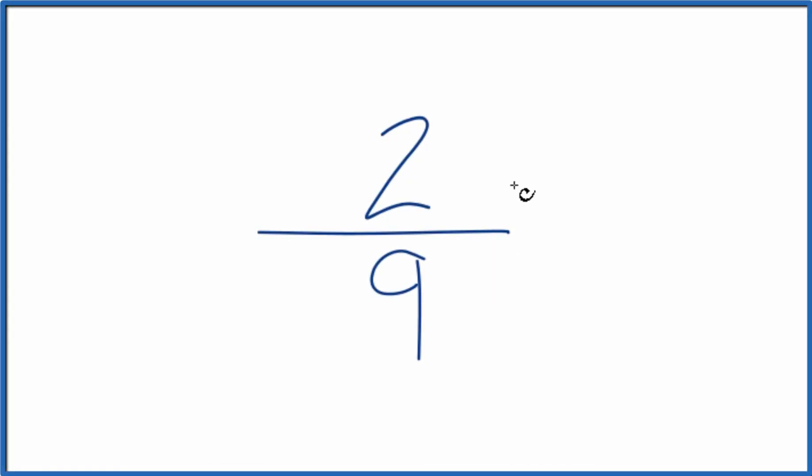In this video, we'll write the fraction 2 ninths as a decimal. We know that it's going to be a decimal because 2 is smaller than 9, so when we divide 2 by 9, we'll end up with a number less than 1, our decimal here.